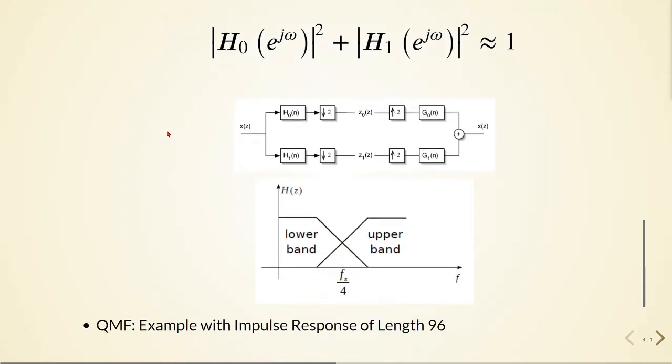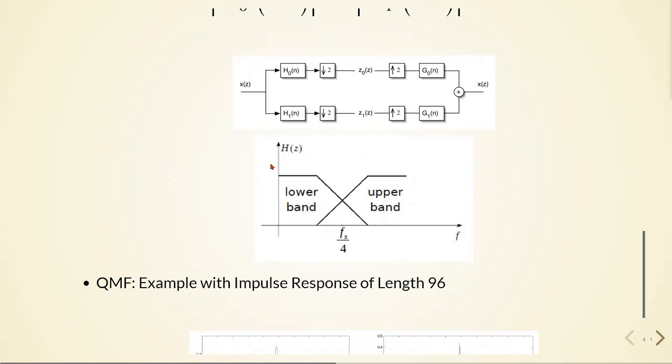And here we have a structure of this filter bank, so we have one section here, downsamplers, this is the analysis part, this is the synthesis part, and here we would have a reconstruction. In this case it's not a perfect reconstruction. And here we have the lower band part and the upper band part, and here we have sampling frequency divided by four.